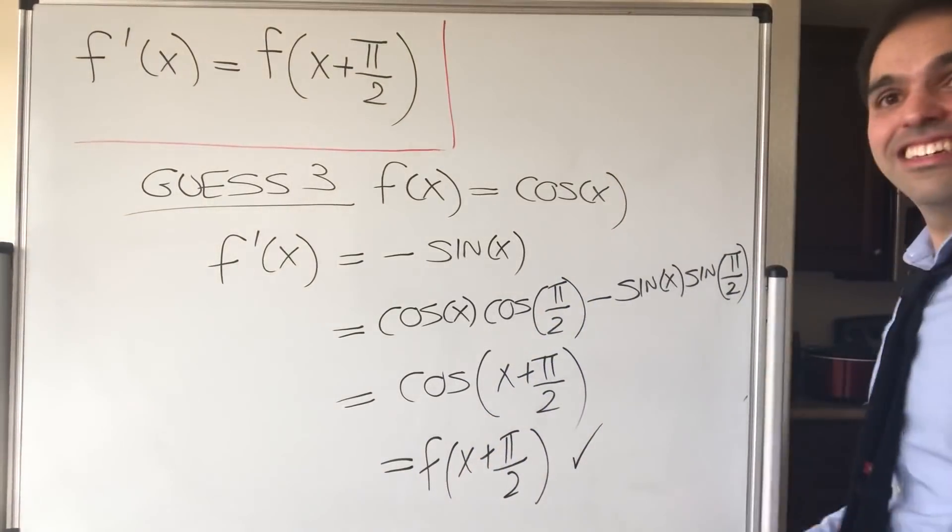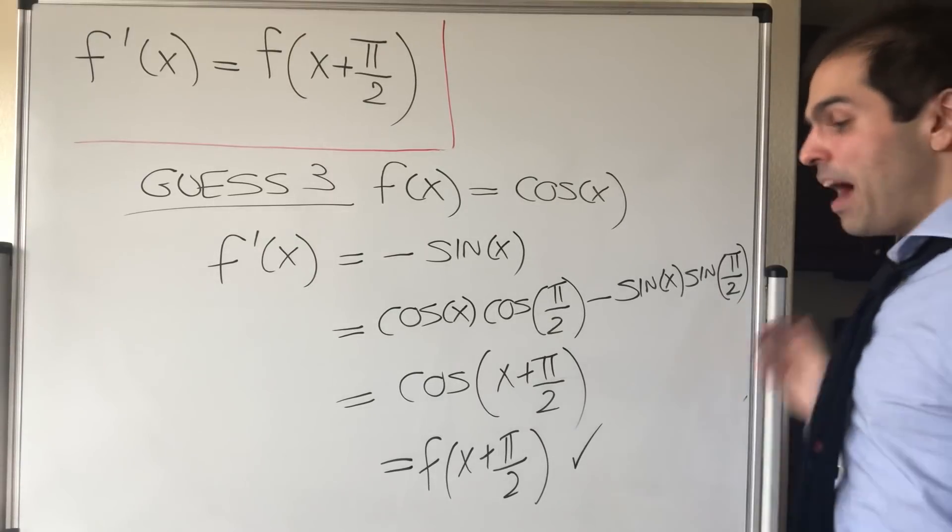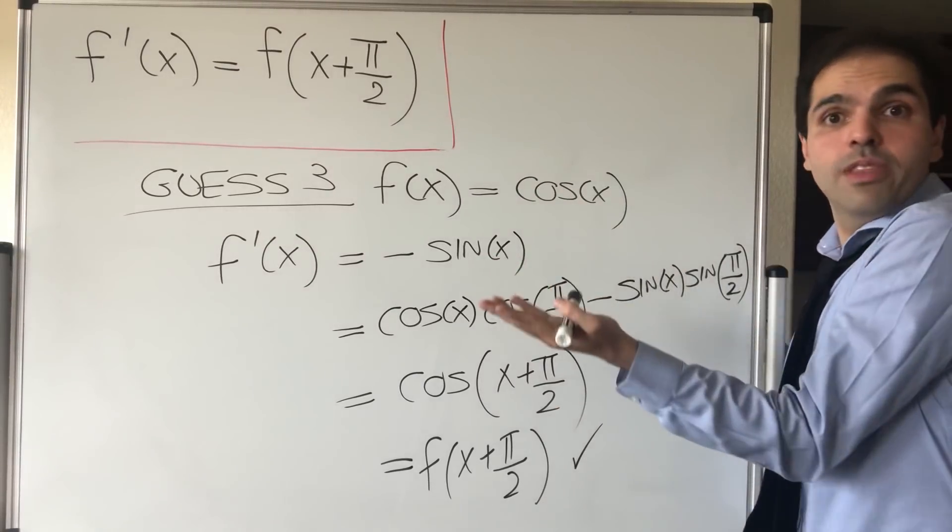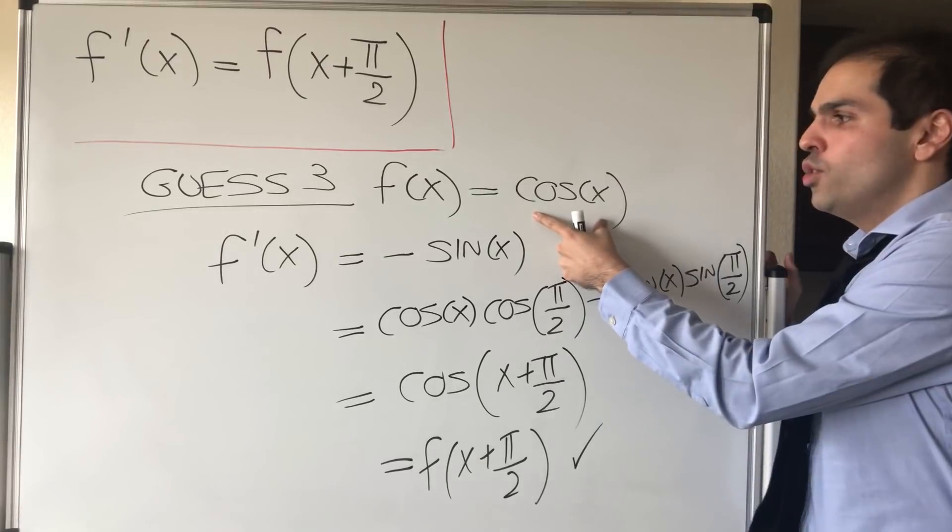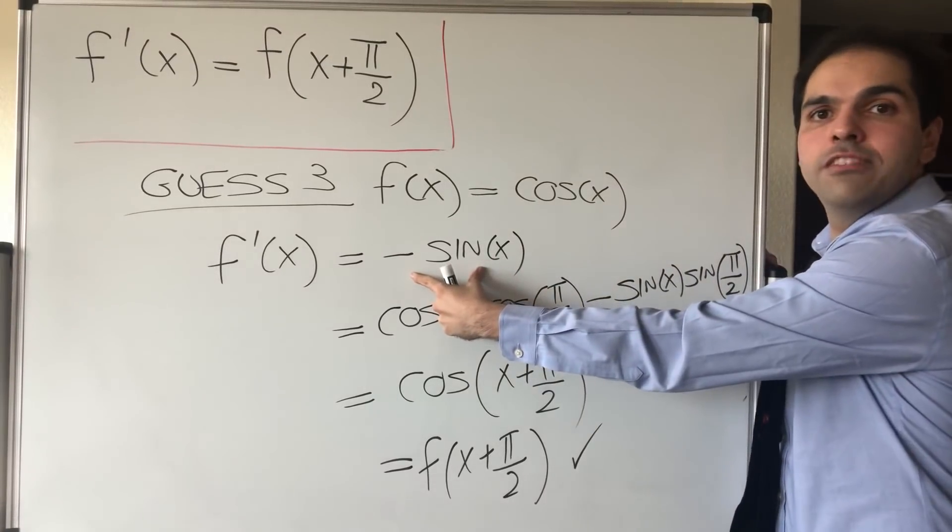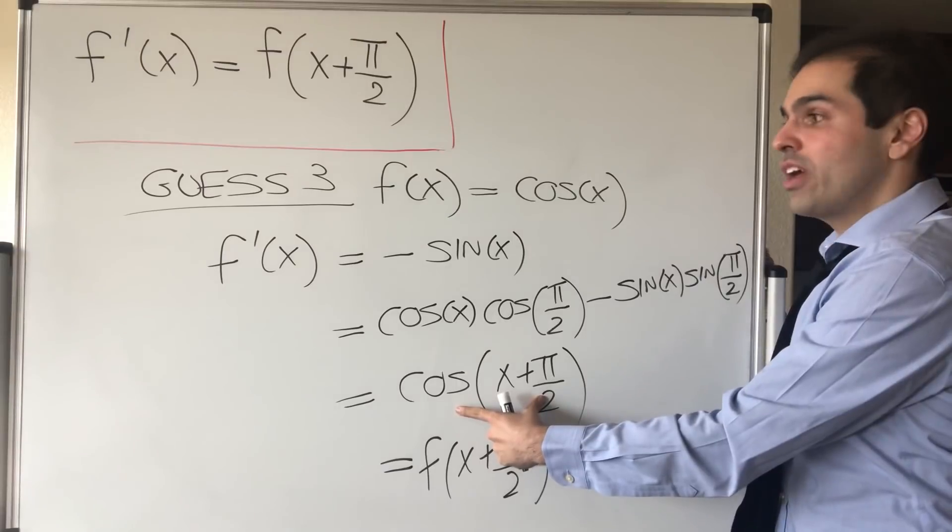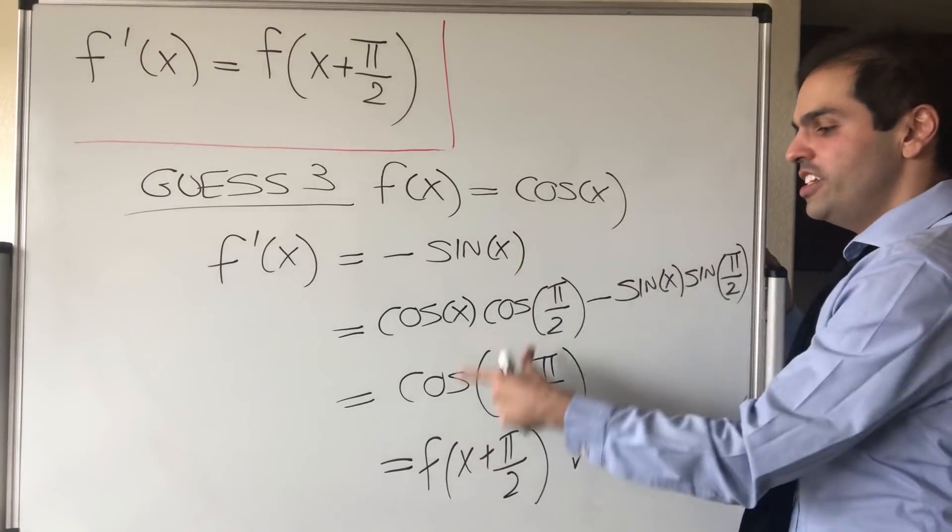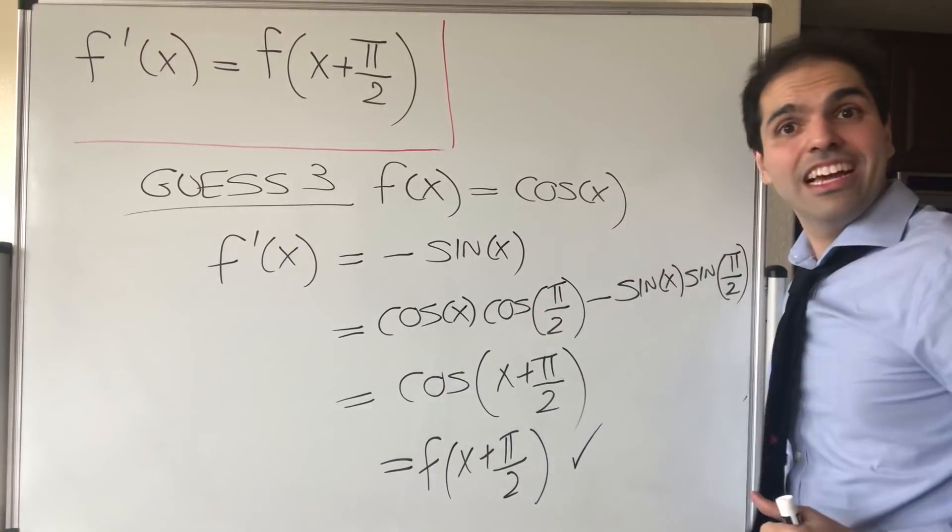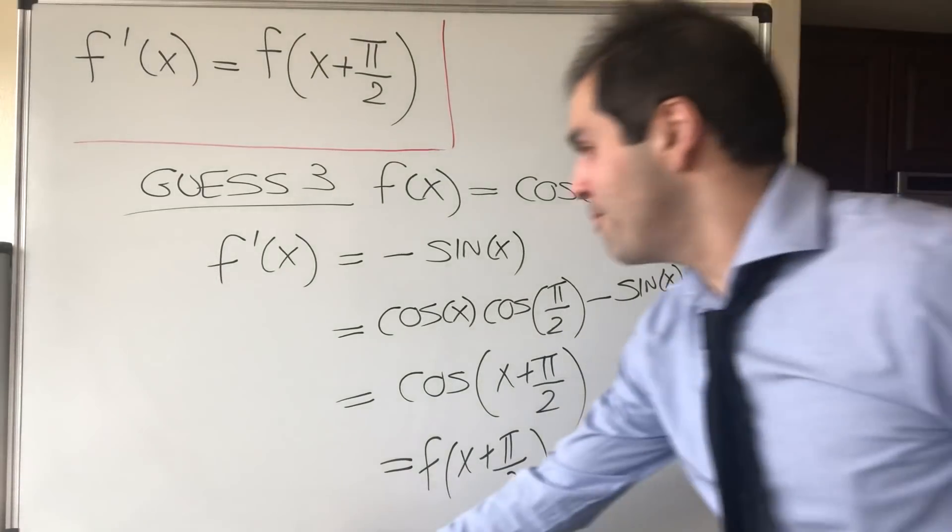Oh my god, so we found one solution, and which by the way explains something interesting about cosine. You always thought that the derivative is minus sine, but this is actually the more clever way of doing it. If you differentiate cosine, it's the same thing as shifting it to the left by π/2.